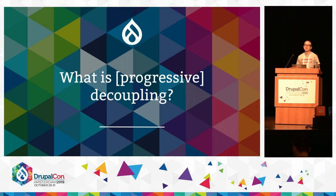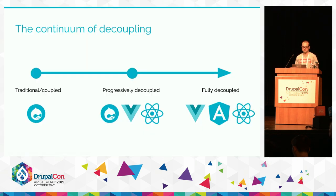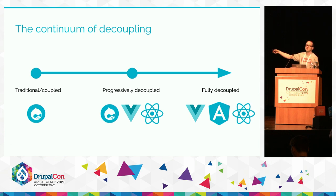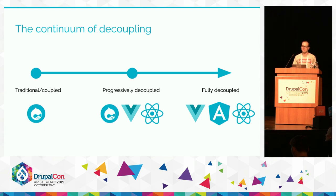So we'll start with what progressive decoupling is. Decoupling in general is when we break the bond between Drupal as a back end CMS that provides data and Drupal as a system that renders your front end. We can think about coupling and decoupling on a scale. On the left hand side we have a traditional coupled Drupal site where Drupal gets the data, renders it, and knows exactly what's going to be on the page — enabling things like in-place editing, contextual links, layout builder, and live previews.